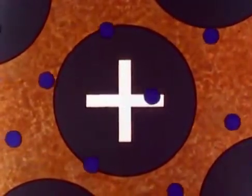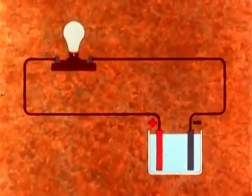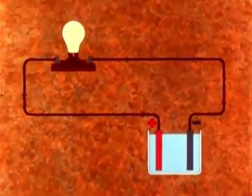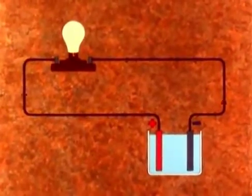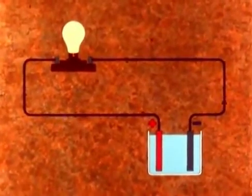For example, in a cell when the terminals are connected to an outside circuit, free electrons flow from the negative terminal to the positive terminal, and we say that an electron current flows.